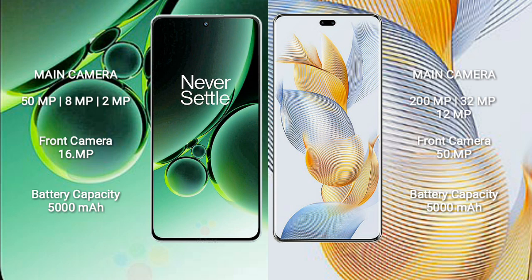OnePlus Nord 3 features a triple rear camera setup of 50MP plus 8MP plus 2MP, and a 16MP front camera. Honor 90 Pro features a triple rear camera setup of 200MP plus 32MP plus 12MP, and a dual front camera of 50MP plus 2MP. OnePlus Nord 3 has a 5000mAh battery with 80W fast charging support, while Honor 90 Pro has a 5000mAh battery with 90W fast charging support.